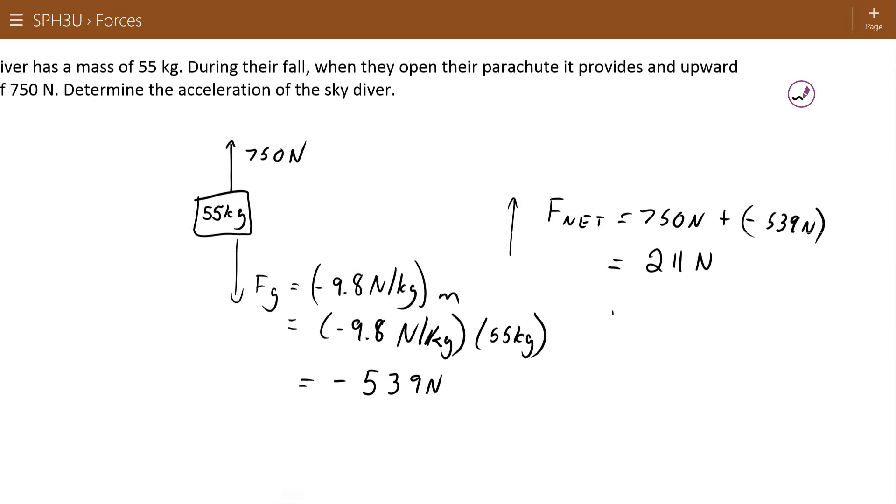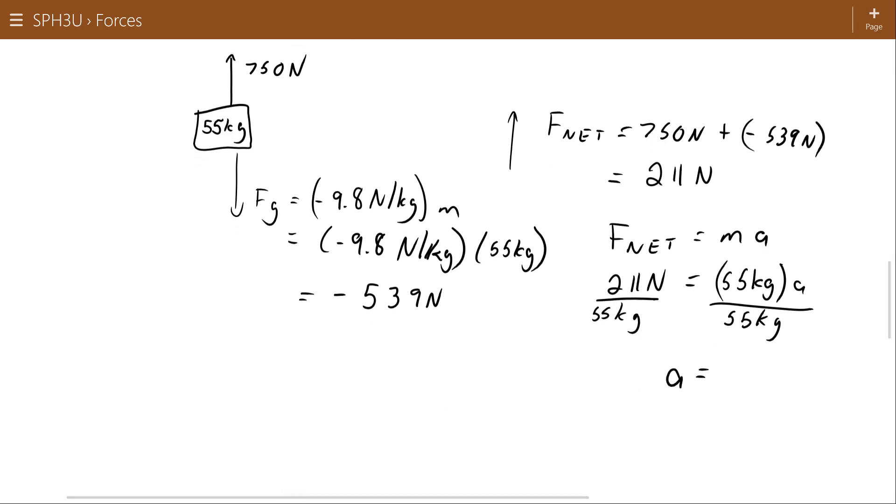Using Newton's second law now. F net equals MA. 211 Newtons equals 55A. Dividing both sides by 55 kilograms, my acceleration is 3.84 meters per second squared.